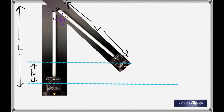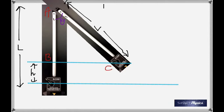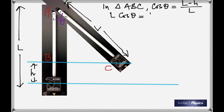From that right angle triangle, what is cos θ? That angle is θ. cos θ is going to be the adjacent side over the hypotenuse. The adjacent side is l minus h, and the hypotenuse is l. So in triangle ABC, cos θ = (l - h) / l.